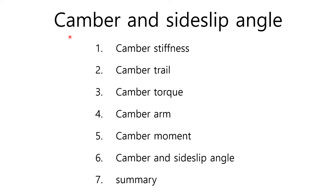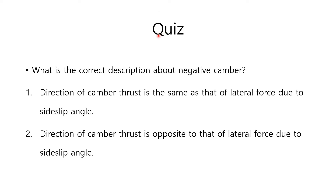Hi guys. I will explain the camber and the side slip angle from camber stiffness to summary. Here I have a quiz for you: What is the correct description about a negative camber? Option A: Direction of camber thrust is the same as that of lateral force due to side slip angle. Option B: Direction of camber thrust is opposite to that of lateral force due to side slip angle.